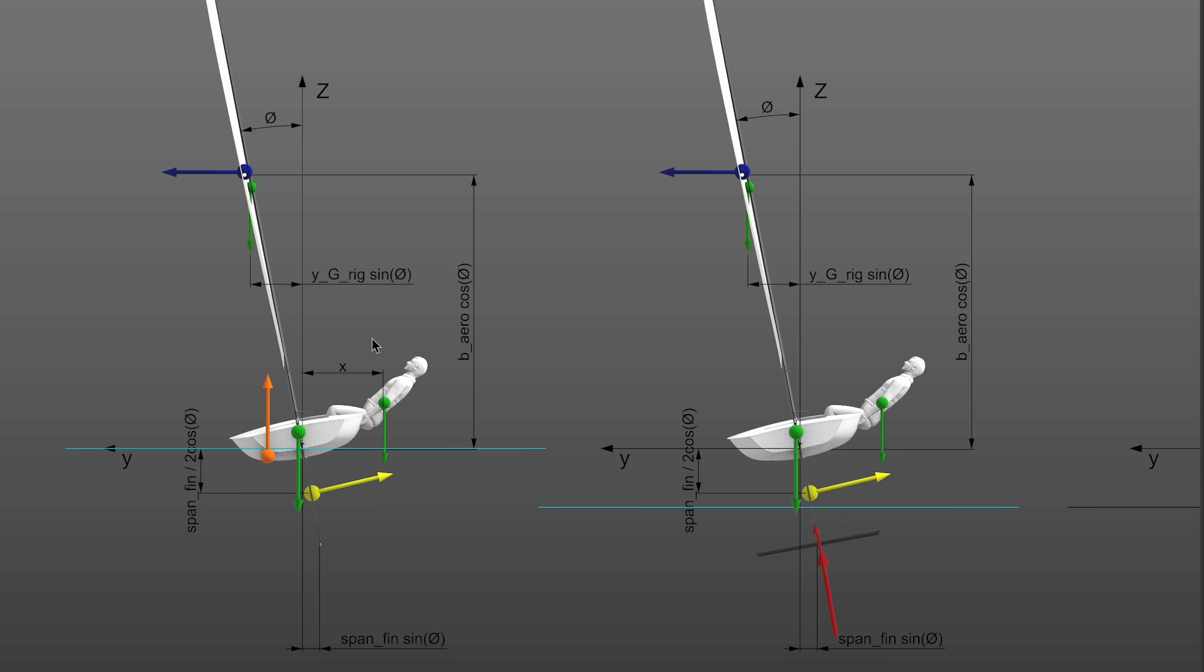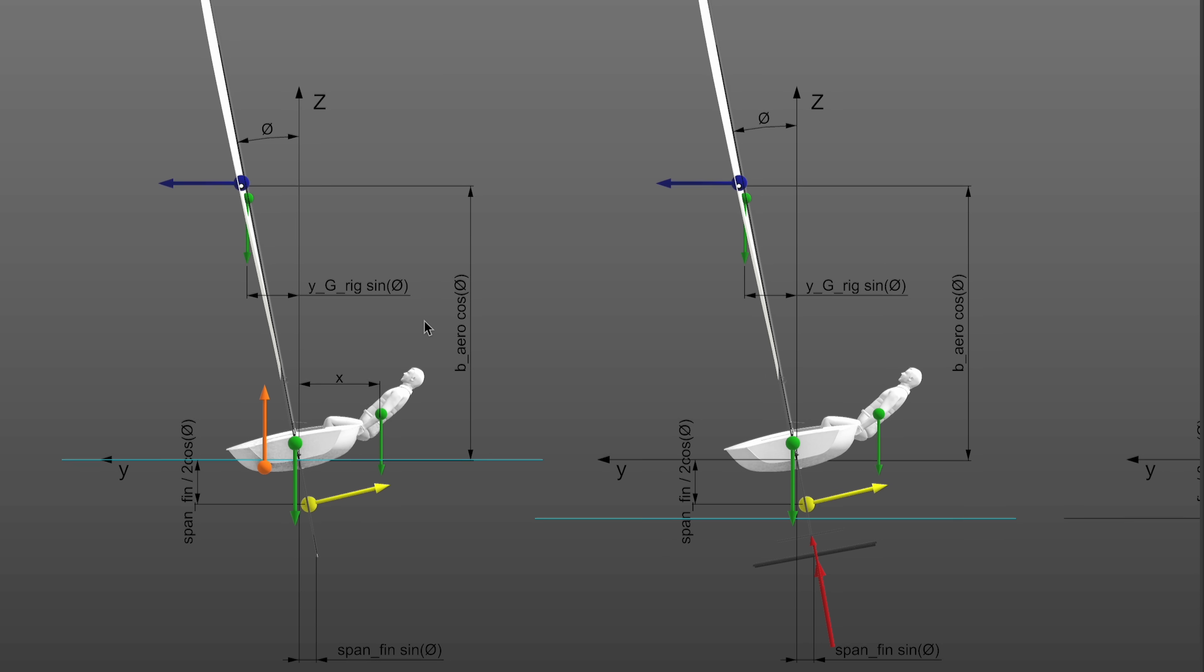From the previous system, we need to solve the transversal equilibrium. Here you can see the difference between a normal displacing boat and a foiling one. In the displacing hull, there is an orange force. That is the Archimedes force that tends to restore the equilibrium of the boat. And this is due to the displacement of the hull that changes its center.